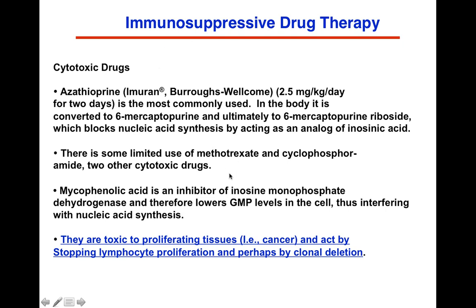There are also methotrexate and cyclophosphamide — two other cytotoxic drugs that are also anti-cancer drugs. Mycophenolic acid is an inhibitor of inosine monophosphate dehydrogenase and therefore lowers GMP levels in the cell, interfering with nucleic acid synthesis. These drugs are toxic to proliferating tissues and act by stopping lymphocyte proliferation, perhaps by clonal deletion — knocking out immune cells and deleting them from the immune repertoire, including possibly those that could interact with the transplant.